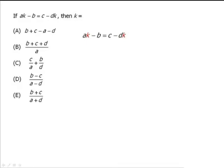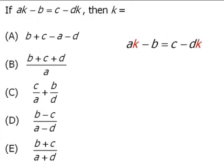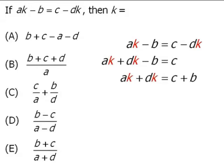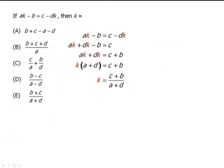Our goal is to solve this equation for k. So let's begin by getting our k terms on the same side of the equal sign. We'll add dk to both sides. And now let's add b to both sides of our equation. At this point, we can factor out our k on the left hand side. Finally, we'll divide both sides by a plus d. And we see that our answer is e.